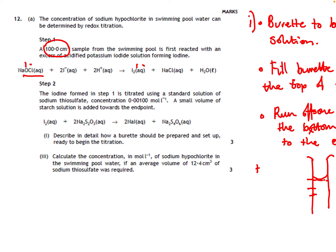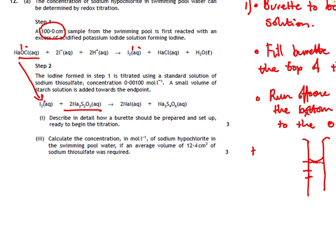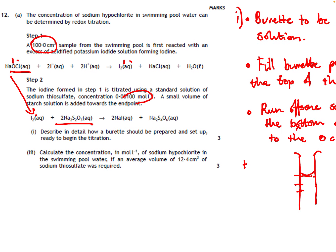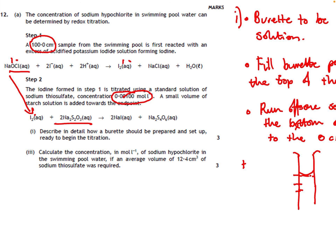Because it's a one-to-one ratio of iodine to sodium hypochlorite, you get the same number of moles of iodine as sodium hypochlorite. That iodine is then used with sodium thiosulfate in a one-to-two ratio overall. The concentration of sodium thiosulfate is 0.001 and the average volume used was 12.4 cm³.